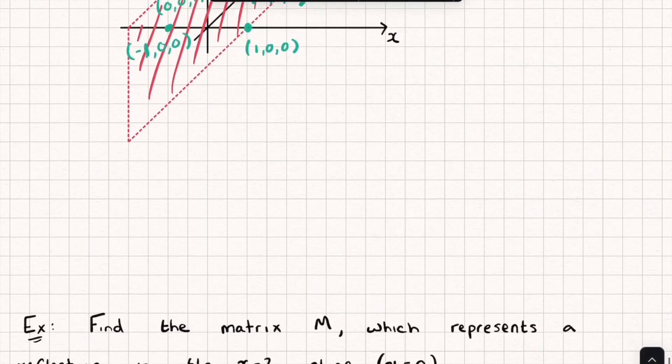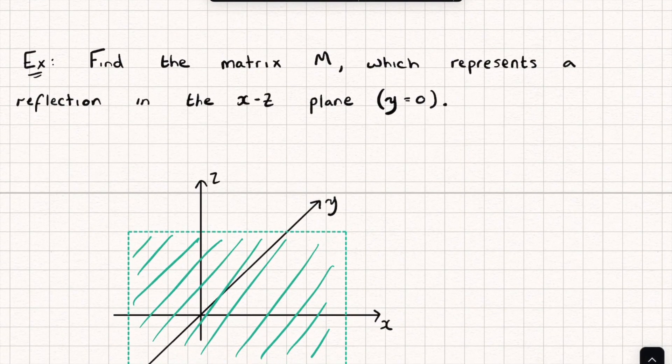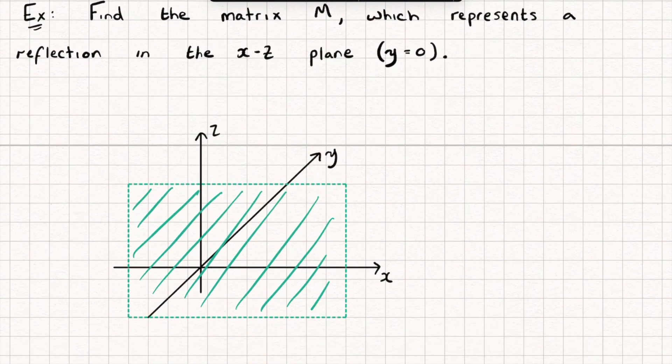Now finally let's look at the third type where we are reflecting in the XZ plane. So again let's put on our points. I've got the point here which is (1,0,0). I've got the point back here which will be (0,1,0). And my point on the Z axis which is (0,0,1). So let's think, what's going to happen?